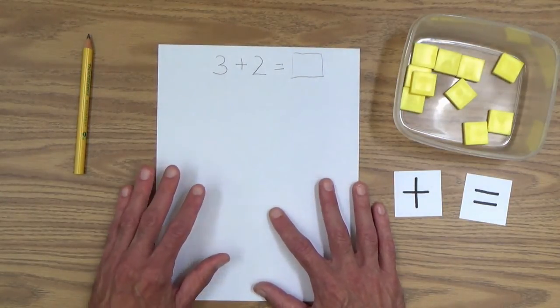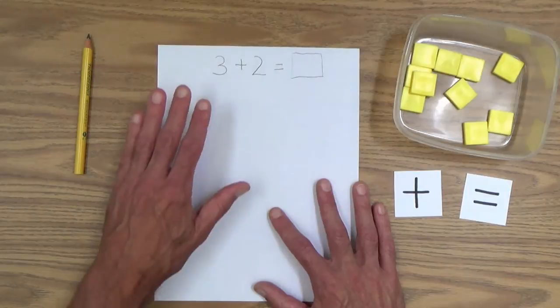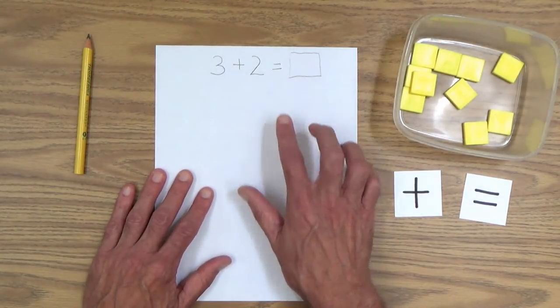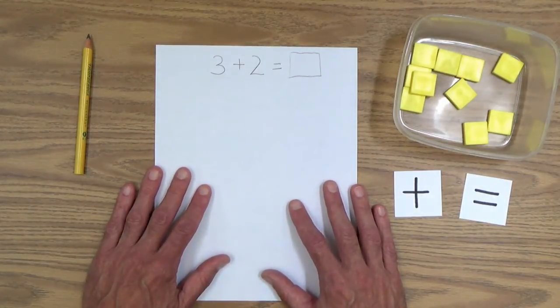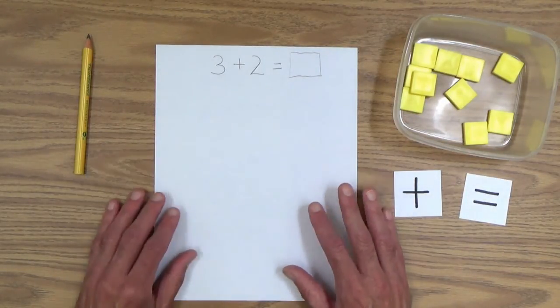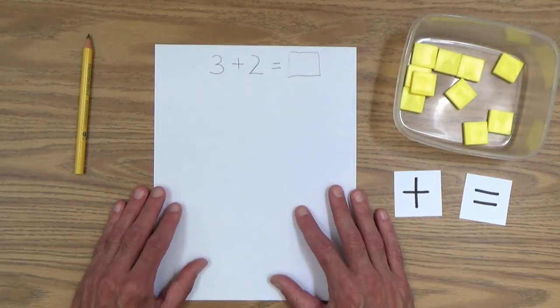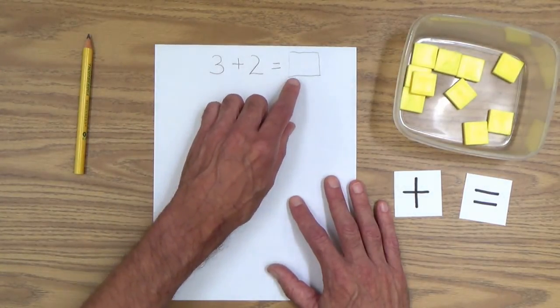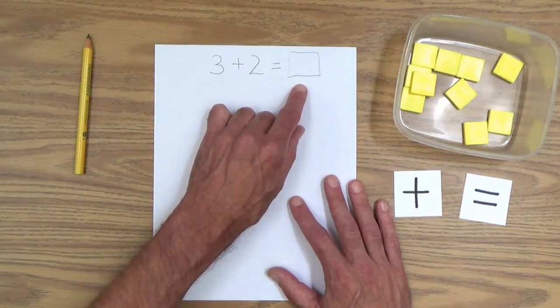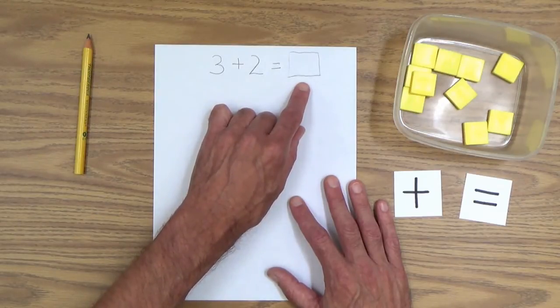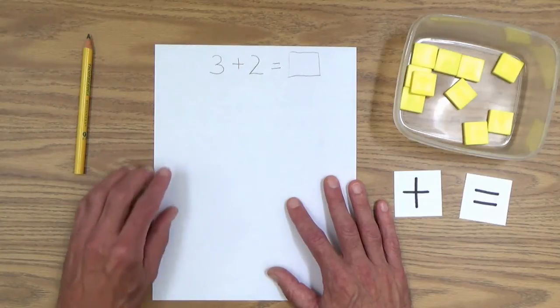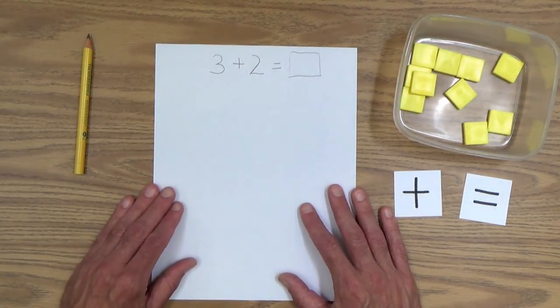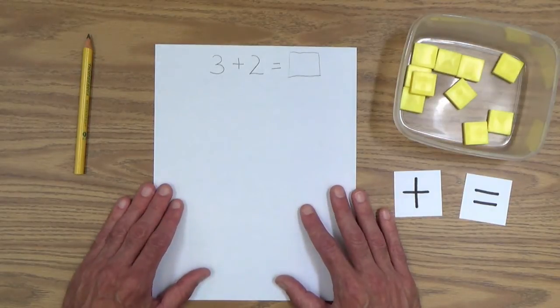And your child has already seen the equal sign. It can mean the same as. So, you could read it. Three plus two is the same as. And then what? The answer will be over here. Sometimes, you can make a little box here as a space for the answer or a line underneath or just leave it blank. This, you can tell your child, this is called an equation because it has an equal sign in it. So, the way that he or she would want to read this is three plus two equals how many? So, there it is. His or her first equation.